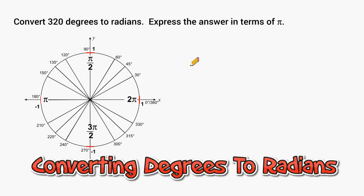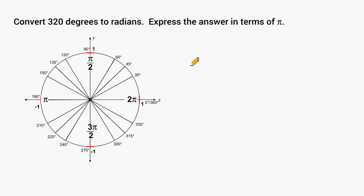Hey there, this is Mr. Masonette and what we're going to do in this tutorial is practice converting angles given in degrees to radians. First, we're going to review some of the more common angle measures you'll run across and what they equal in radians. Then I'll show you how to set up a proportion to solve, and at the end I'll show you a shortcut for converting degrees into radians.